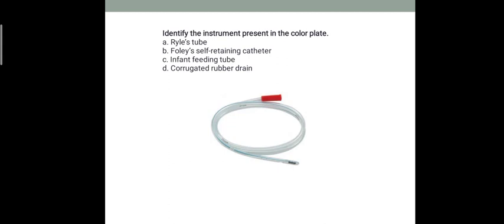Now let's cover general surgery equipment. Identify the instrument in the color plate: is it Ryles tube, Foley catheter, infant feeding tube, or rubber drain? It's a Ryles tube - a nasogastric tube. The name suggests it has relation with nasal and gastric areas. This tube has two ends: one hollow and one blunt. The blunt end, which you can see in green color, is inserted through your nose into the stomach area. We then blow air and check with the stethoscope whether air is going, and only then feed the food.